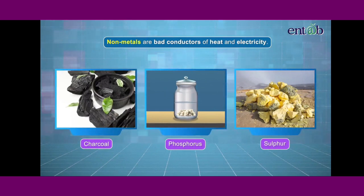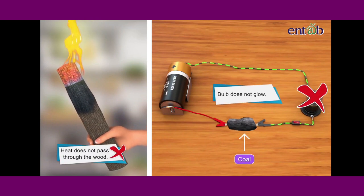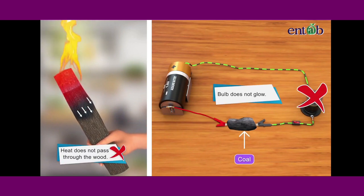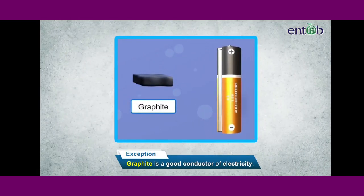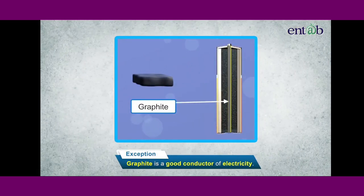Nonmetals are bad conductors or insulators of heat and electricity. This means they do not allow heat or electricity to pass through them. However, talking of exceptions, diamond is a good conductor of heat while graphite is a good conductor of electricity.